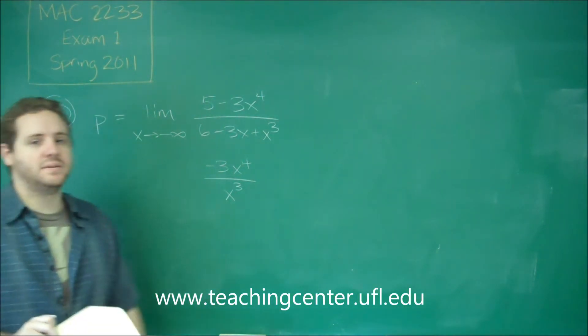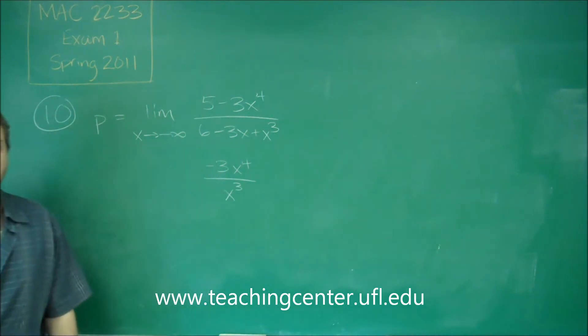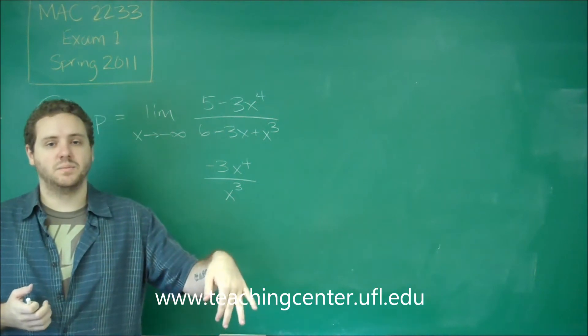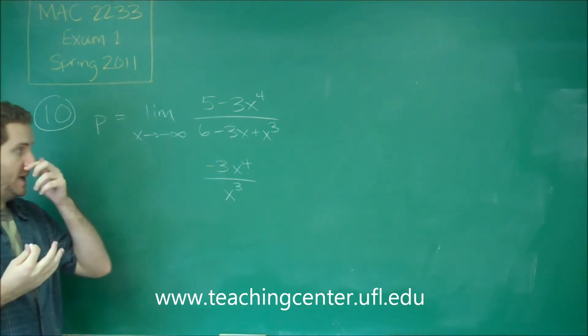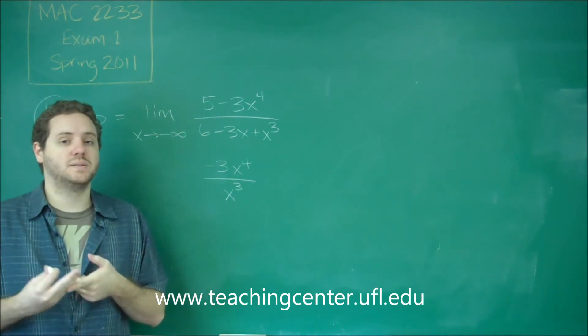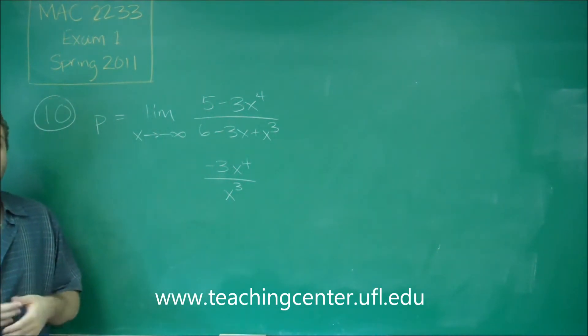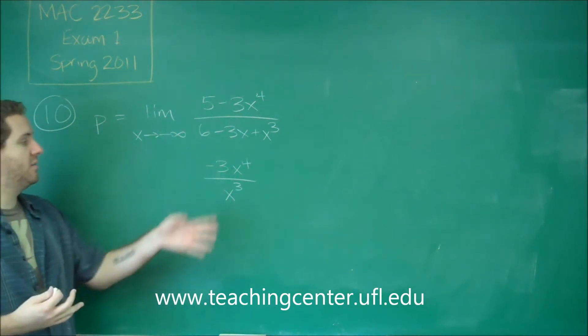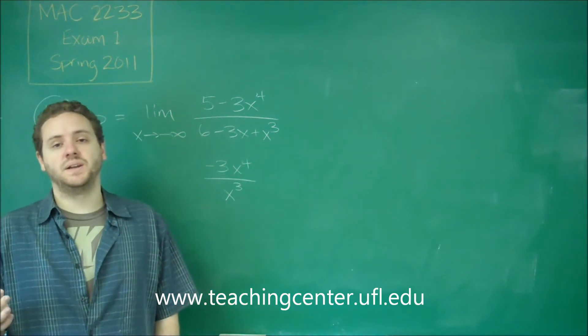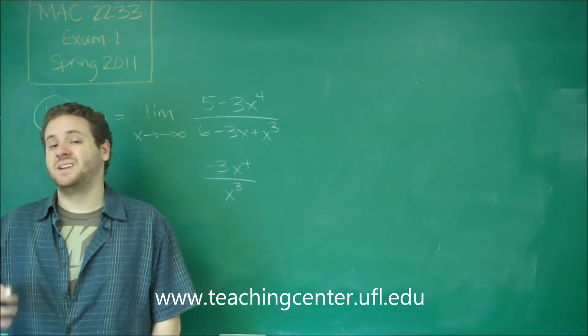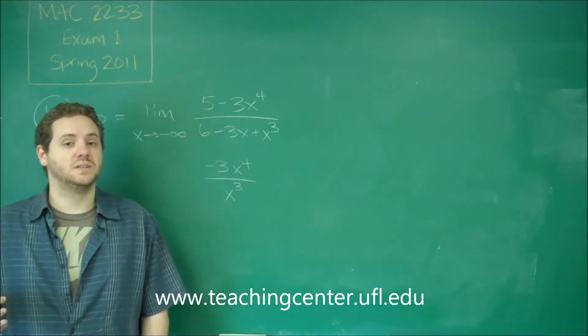So first of all, we want to notice the degree of the top is higher than the bottom. There's only three scenarios for an infinite limit and a rational function. Either the top is higher degree, they're the same, or the bottom is higher degree. In this case, we have the top is higher degree. And you should have memorized that if the top is higher degree, your answer is always going to be infinity or negative infinity. We just need to determine which.